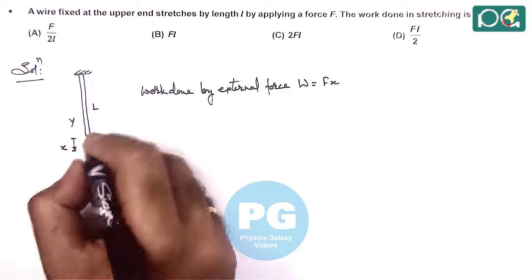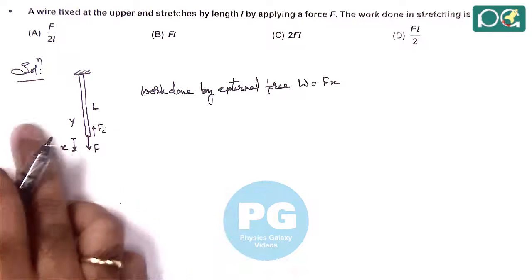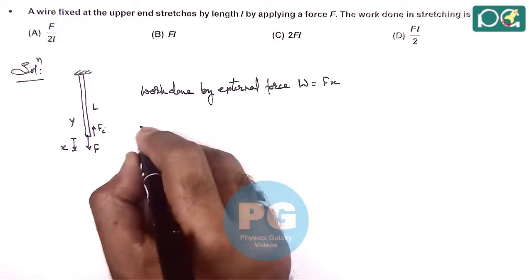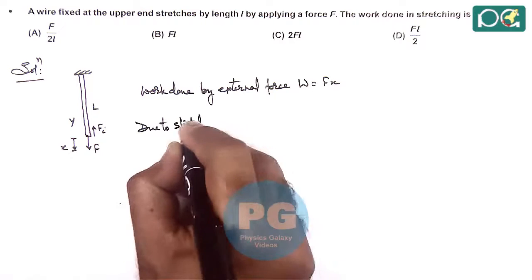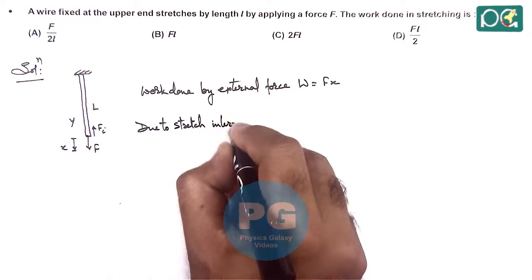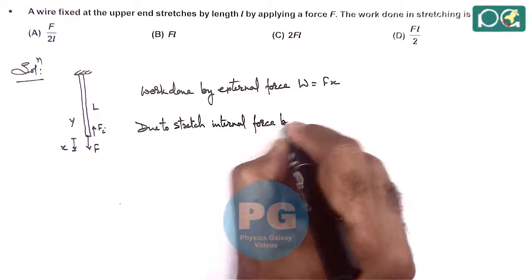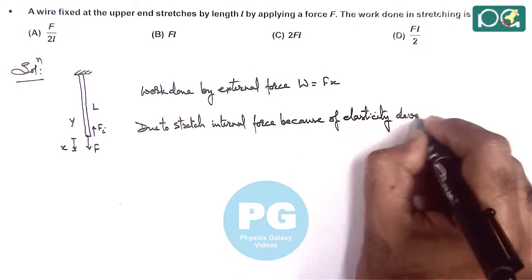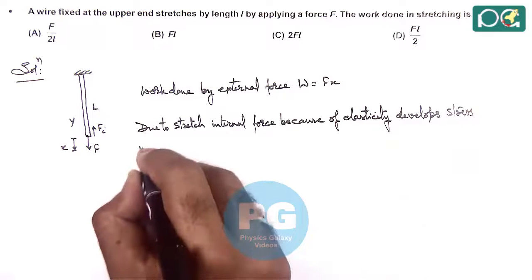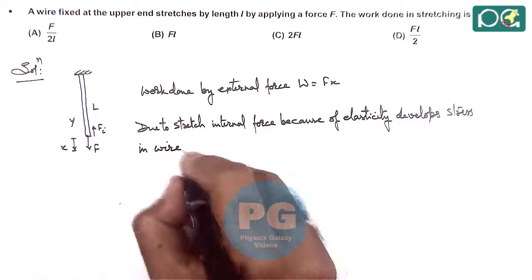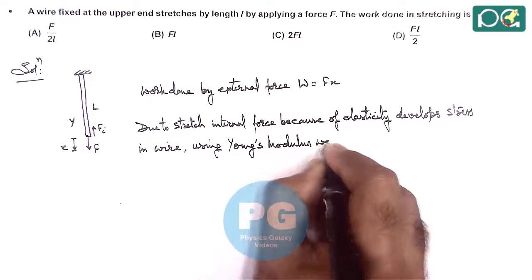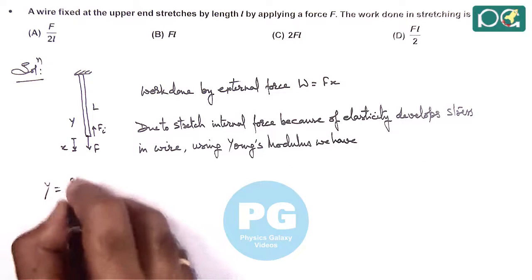But when the force is applied during extension, there will be an internal force acting on the wire due to which stress will be developed in the wire, which keeps on increasing as the wire is elongated. Due to stretch, internal force, because of elasticity, develops stress in wire. Using Young's modulus, we have Young's modulus written as stress by strain.